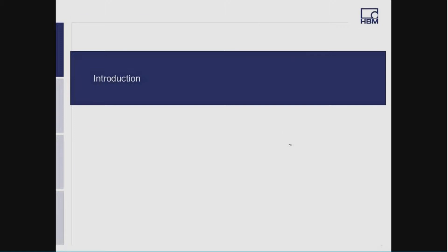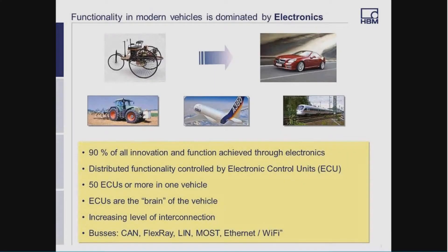I think you can imagine that the functionality in modern vehicles is dominated by electronics, and mainly all innovation is achieved through electronics. In a vehicle, major functions like motor control, gearbox control, or vehicle dynamics are controlled by ECUs — electronic control units. A vehicle, in this case, can be a car, a commercial vehicle, a plane, or a train, and a vehicle can have up to 50 ECUs or even more. You can compare the sum of all ECUs — the network of all ECUs — like the brain of the vehicle, the whole intelligence.